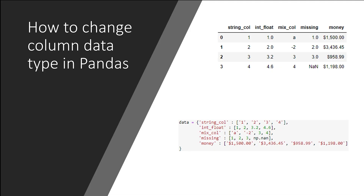Hey everyone, my name's Brayden. We're going to look at how to change the data type of a column in pandas. Specifically, we're going to see what happens when we have a column of strings that are actually numbers, and when we have a mixture of integers and floats — it gets read in as all floats. We'll also cover mixtures of strings and numbers, missing values, and characters in strings like with money or percent signs. If you want to know how to convert to datetime, I have another video on that — I'll add the link to the description below.